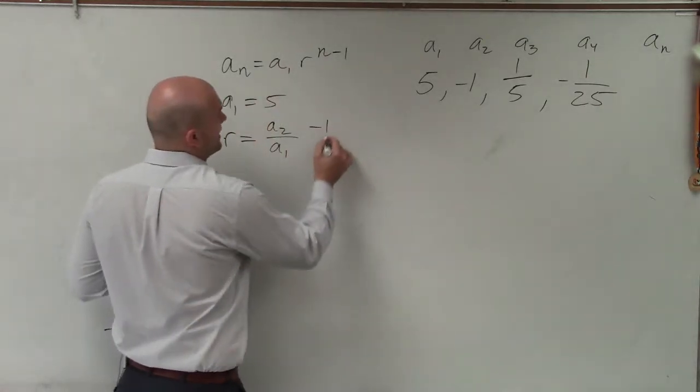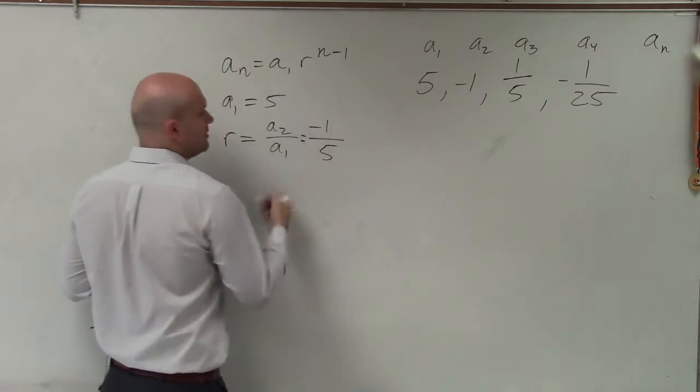So a sub 2 is negative 1 over a sub 1, which is 5. So that was very easy.